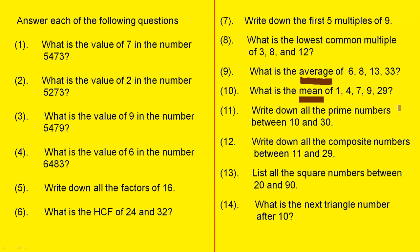Write down all the prime numbers between 10 and 30. We gave a very clear description in our Year 7 lesson and explained what are prime numbers. Write down all the composite numbers between 11 and 29. We did the same for composite numbers. We actually explained the meaning of that term.